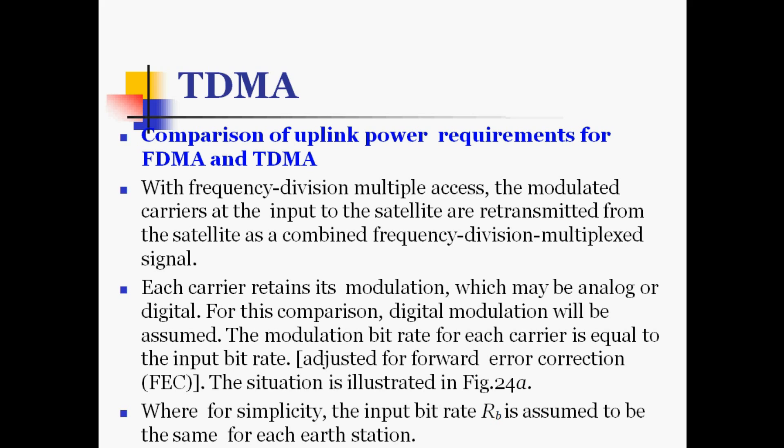For FDMA uplink analysis, with frequency division multiple access the modulated carriers at the input to the satellite are retransmitted as a combined frequency division multiplexed signal. Each carrier retains its modulation, which may be analog or digital. For this comparison, digital modulation will be assumed. The modulation bit rate for each carrier equals the input bit rate, adjusted for forward error correction. For simplicity, the input bit rate RB is assumed to be the same for each earth station.